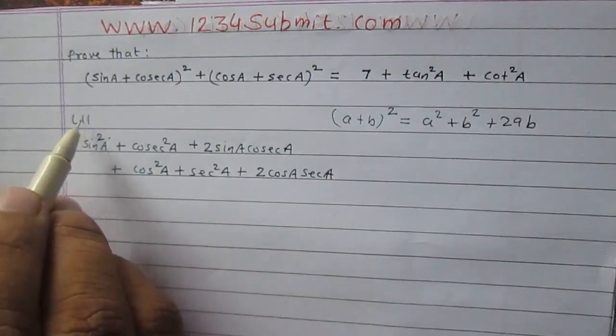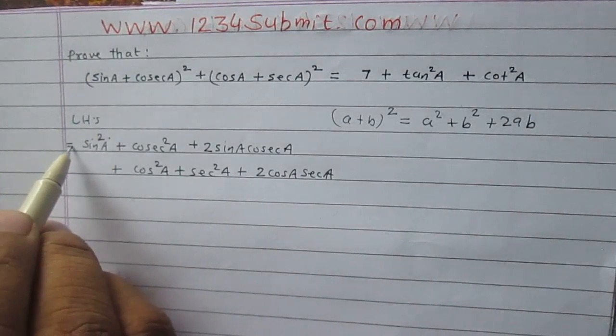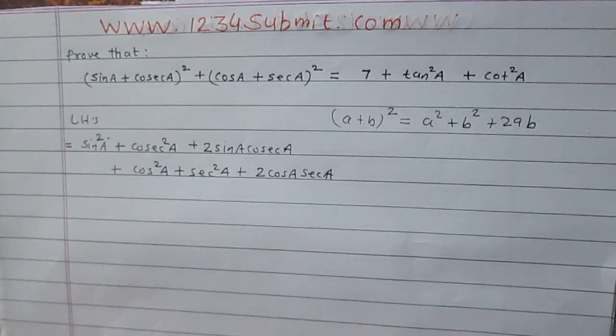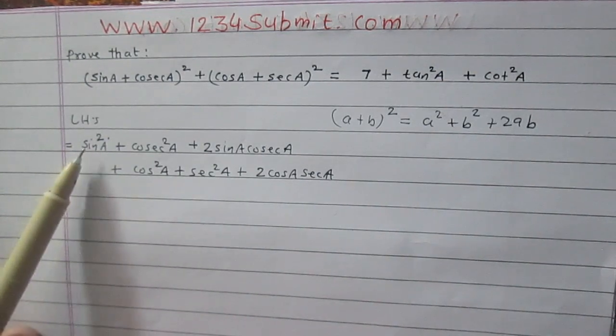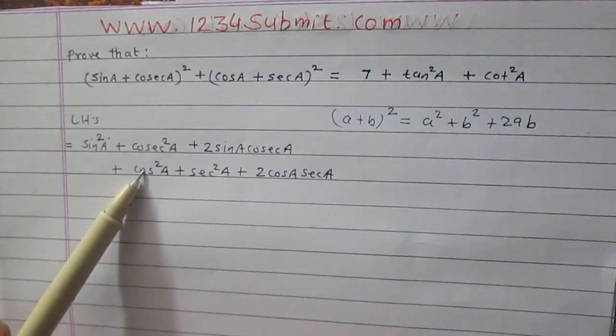After simplification, here we have two terms sin square a and cos square a and these two terms are in addition. As we know that sin square a plus cos square a is 1.